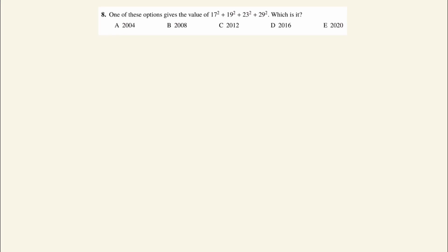One of these options gives the value of 17² + 19² + 23² + 29². To answer this quickly, all we need to do is look at what the last digit is.